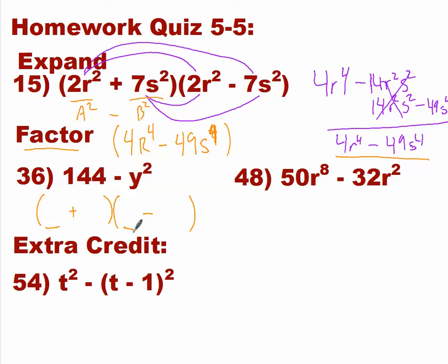It's going to be the square root of 144. What is the square root of 144? 12. So 12 goes in both spots. But what if it's not a perfect square? If it is not a perfect square, then you can't do this.